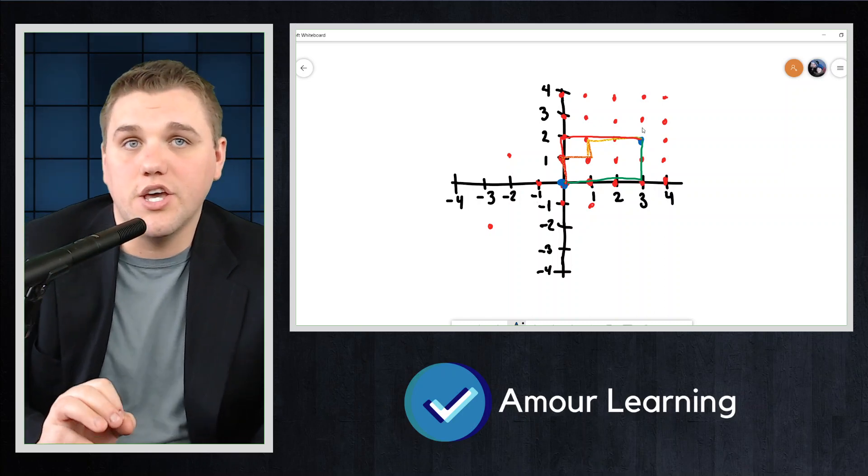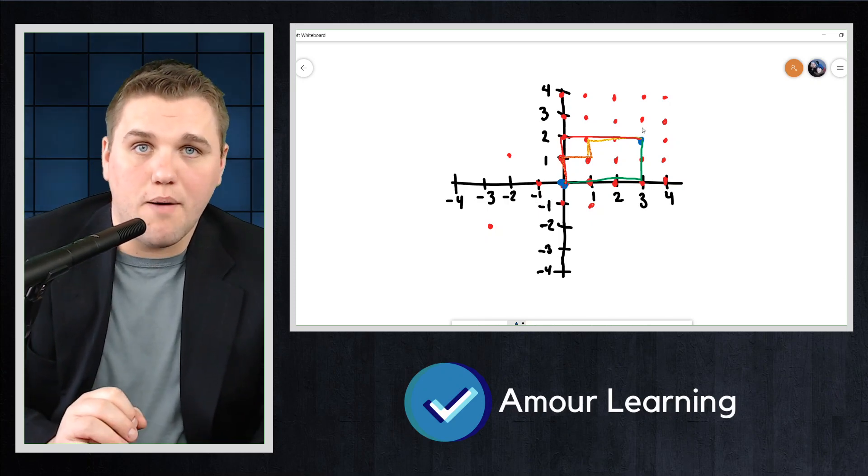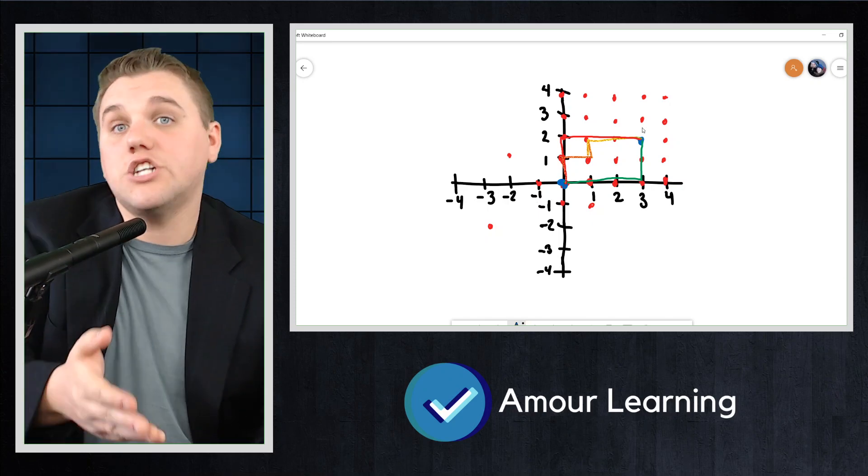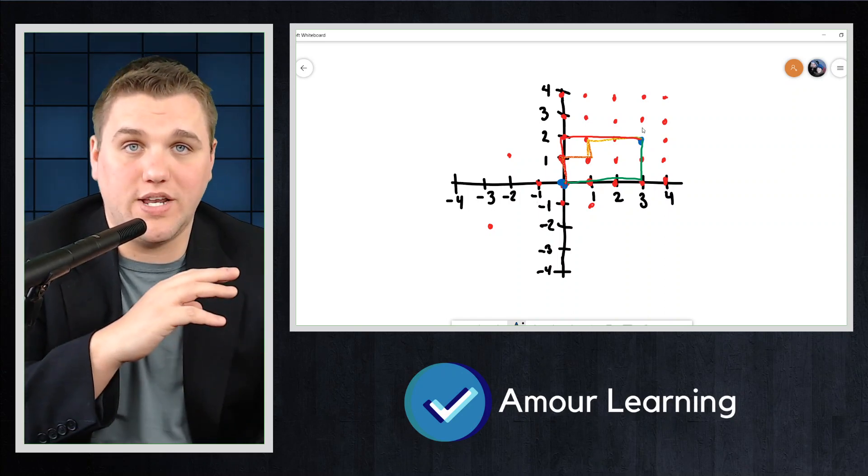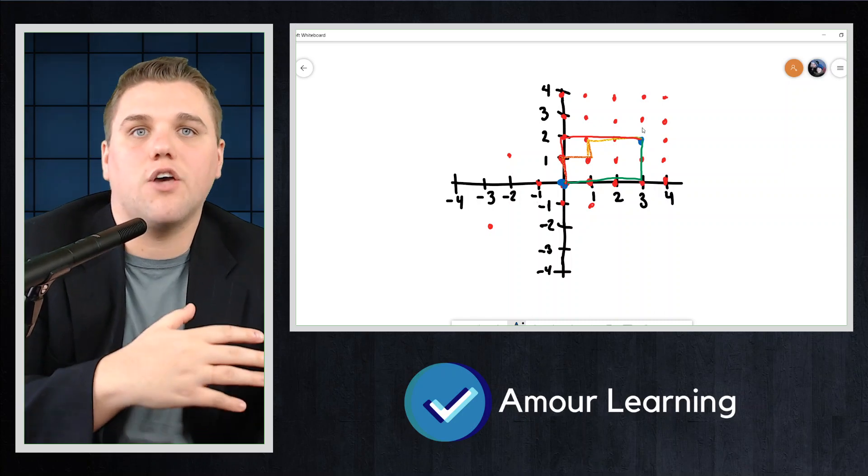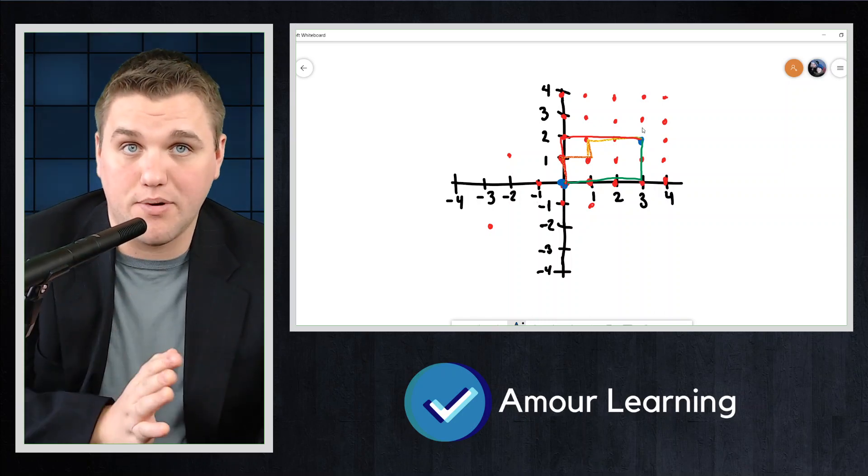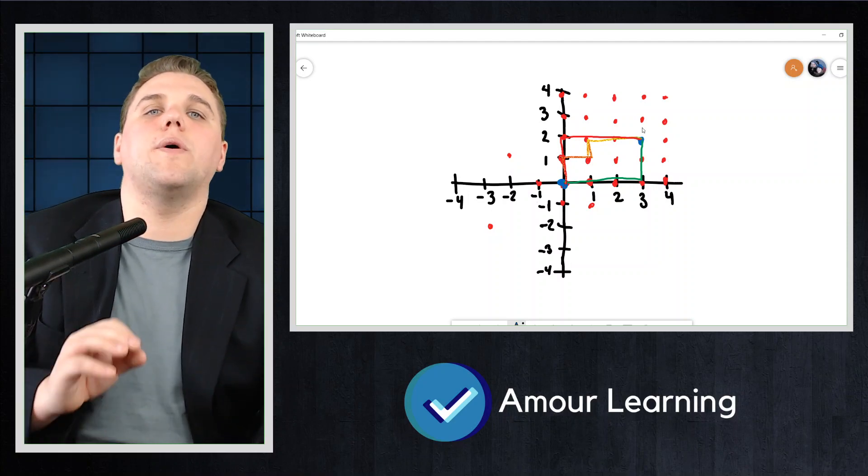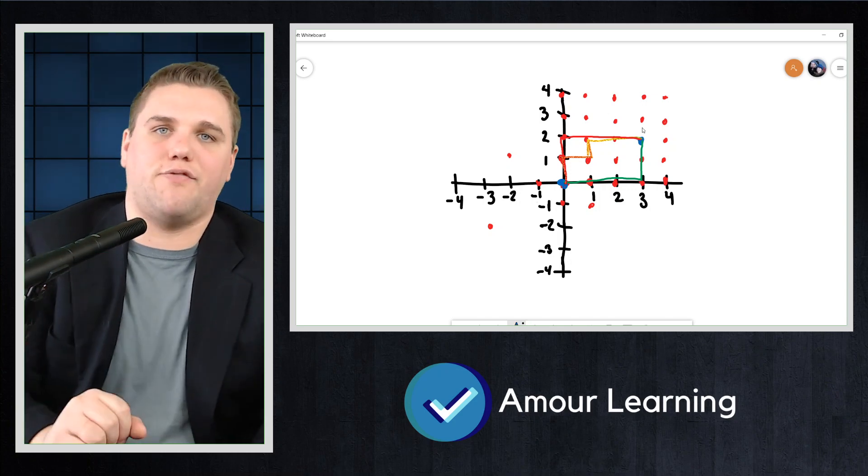So here notice, to ensure the path is the shortest possible, each move must be either to the right or up. Additionally, in this case, note that no matter what path we take, we must make three steps to the right and two steps up. No matter what order we make these steps, there will always be five steps. Thus, each path has length five.